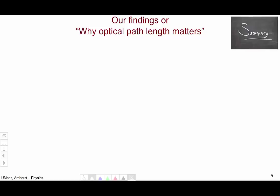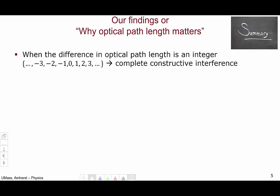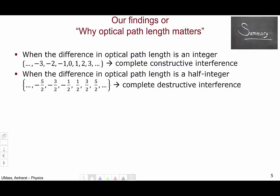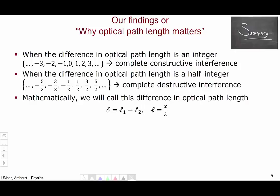Let's generalize these results. Any time the difference in optical path length is an integer — one, two, minus two, minus three, zero — we get complete constructive interference: peaks line up with peaks, or troughs line up with troughs. Meanwhile, when the difference in optical path length is a half integer — one-half, three-halves, minus five-halves, etc. — we get complete destructive interference: a peak lines up with a trough. Mathematically, we call this difference in optical path length the lowercase letter delta, and it's just the difference in the two path lengths: delta equals L1 minus L2.